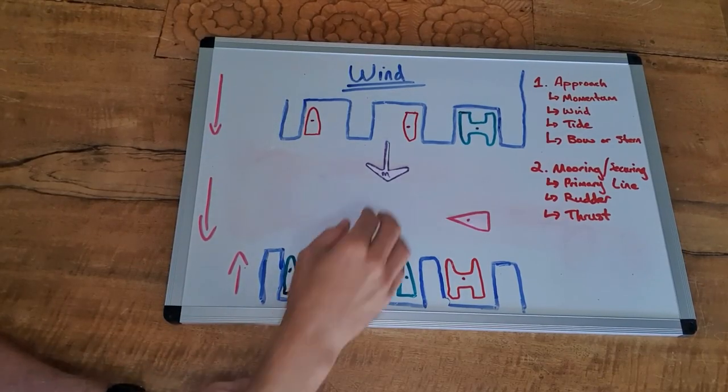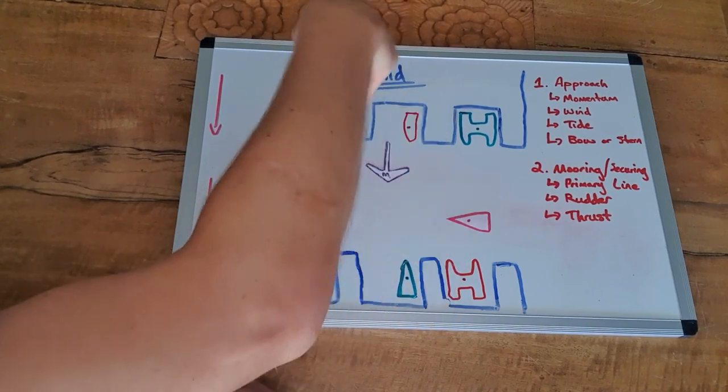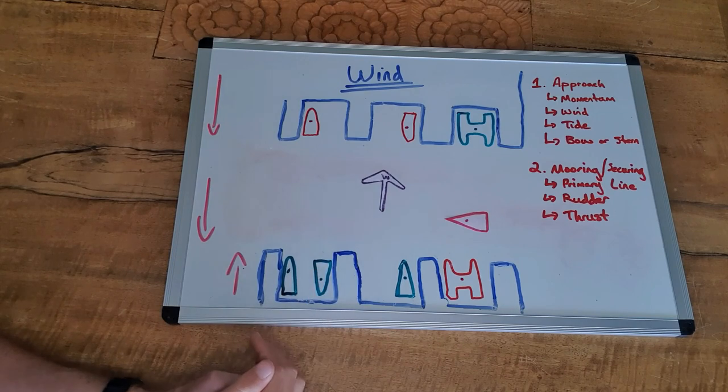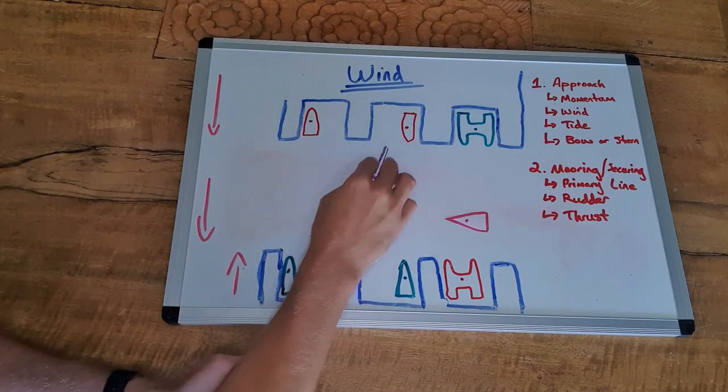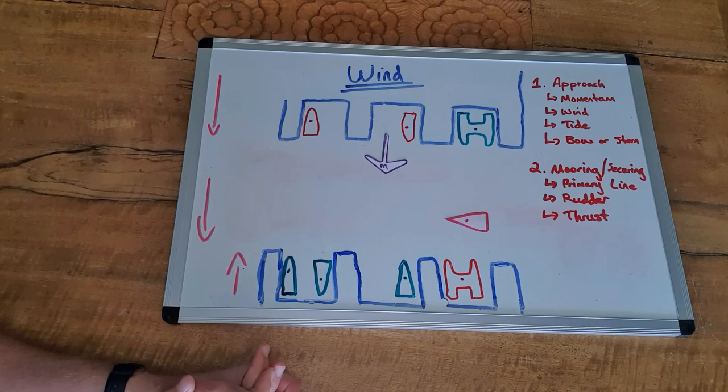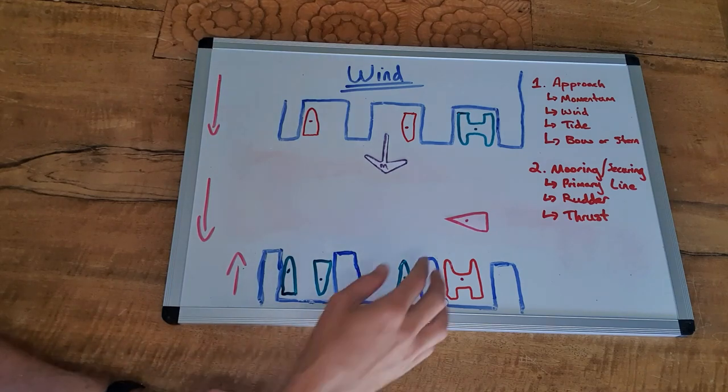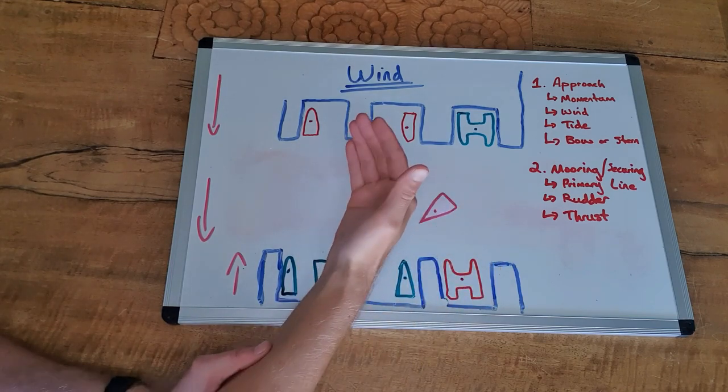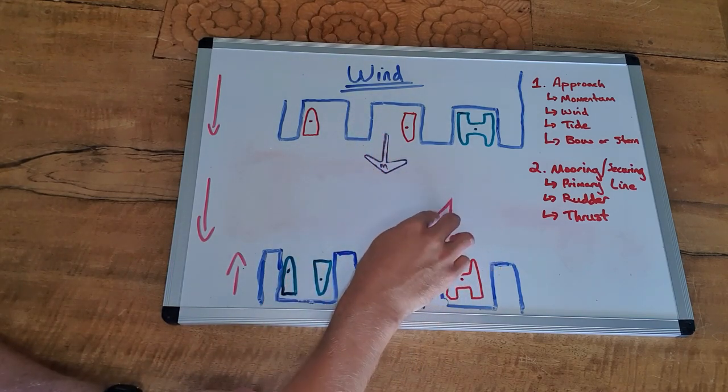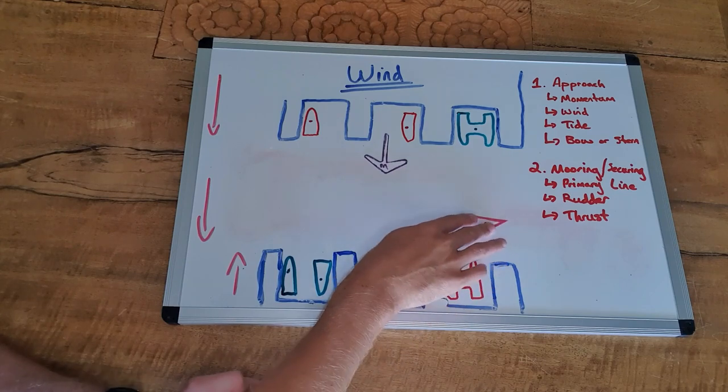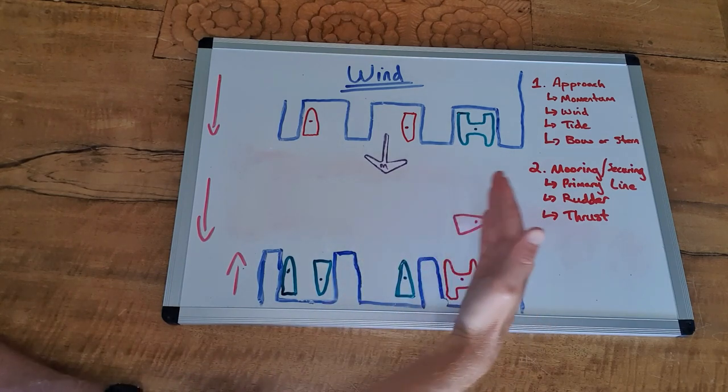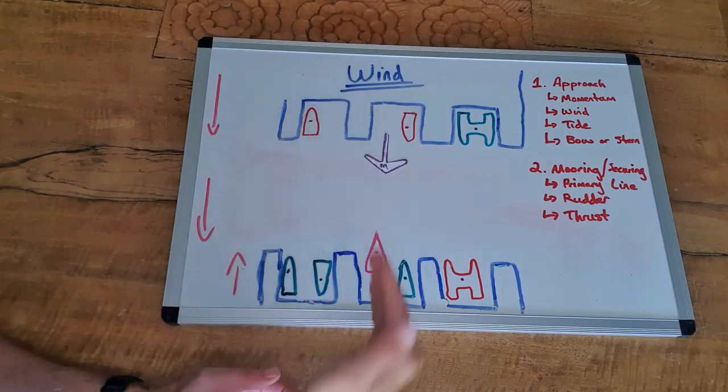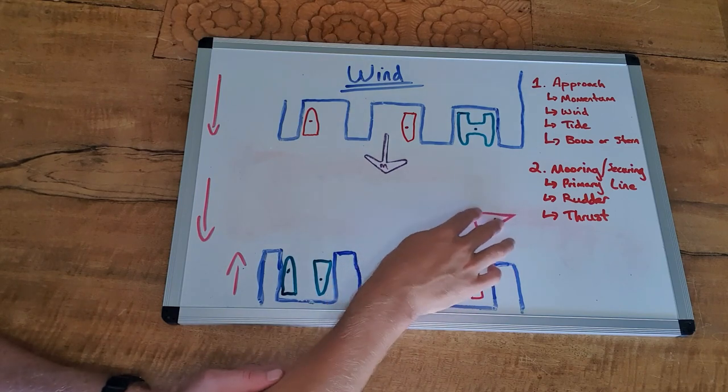And finally, we've got wind blowing us this way through the marina, into our berth, or this way through the marina, out of our berth. Either of these two scenarios are pretty straightforward for us as well. The only thing we really need to be concerned about is if that's quite a strong breeze and we've decided to approach, we generally will approach from this way if we're coming into a berth like this so we can carry momentum in, and that's whether the wind's going this way or pushing us out, same kind of approach.